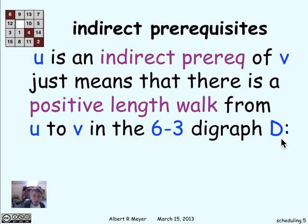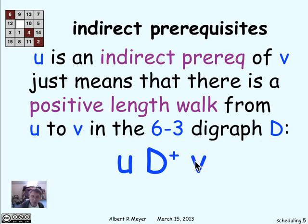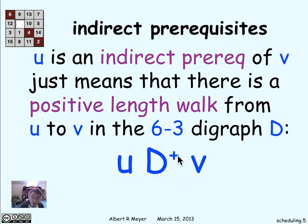There's a positive length walk from 1801 to 6006, meaning you really have to have taken 1801 before you take 6006. We're talking about the positive length walk relation D+ of the digraph D. If D is the digraph shown in the direct prerequisite chart, then we're interested in D+. U D+ V just means there's a positive length walk going from U to V.